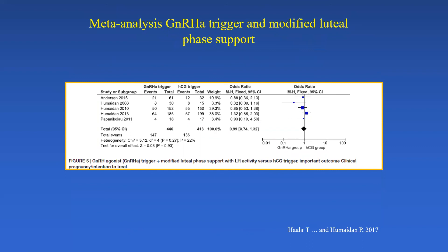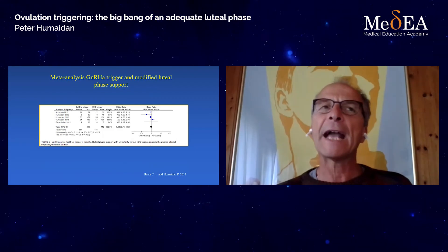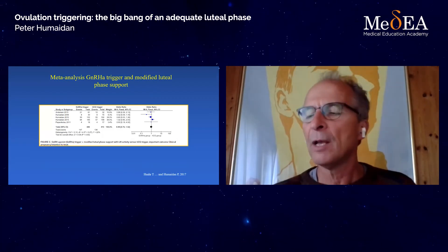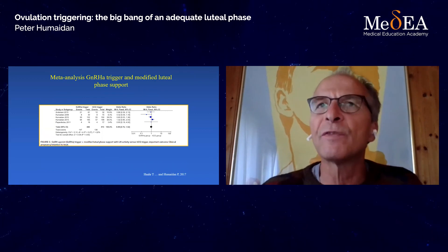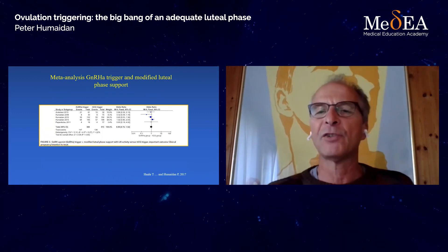I know most of you use the agonist trigger for segmentation rather than modified luteal phase support. But I want to show this small meta-analysis including all our papers and two other papers: if you use modifications — usually smaller boluses of HCG during the luteal phase — in a non-OHSS risk patient, you will achieve the same pregnancy rates as with an HCG trigger. So yes, the agonist-triggered luteal phase can be rescued by adding LH activity, but you cannot transfer fresh in an agonist-triggered cycle using only vaginal support — you need to add modifications.